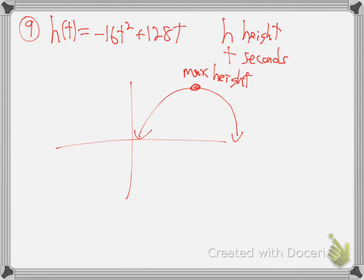At 4 seconds it'll max out. You know how long it'll be in the air? Starting from here - 4 seconds to reach max, 4 seconds to come back down. Eight seconds of hang time, like when they punt a football. The hang time for that projectile will be 8 seconds - 4 to the max, 4 more to the ground. That's assuming no wind resistance.